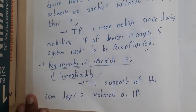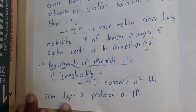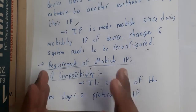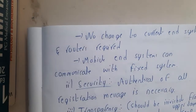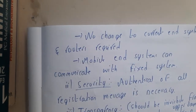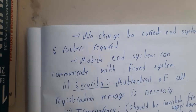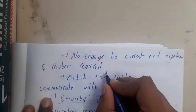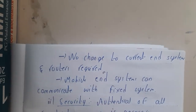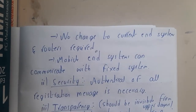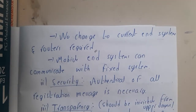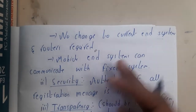So what are the requirements of Mobile IP? Firstly, it should be compatible — it supports the same two layers of the IP protocol stack. It is going to support the normal IP layer protocols we use, like the network layer and the data link layer. There is no change in the current end system and router requirements, so we are changing only a minimum number of things to achieve it.